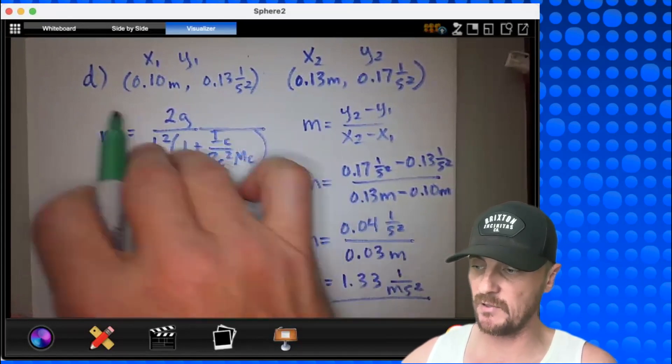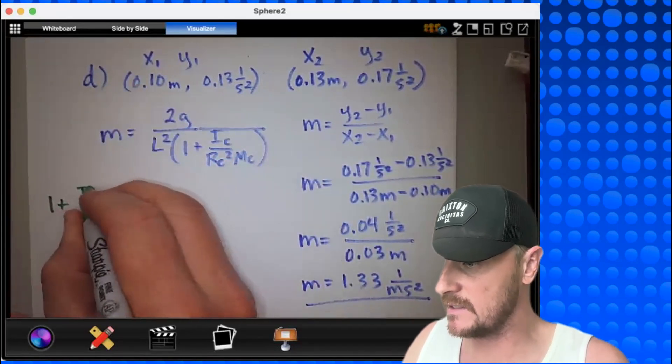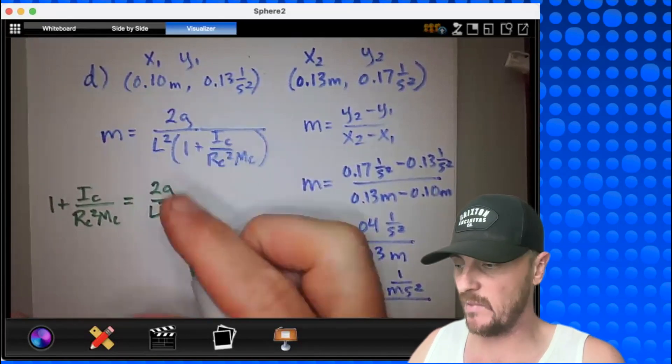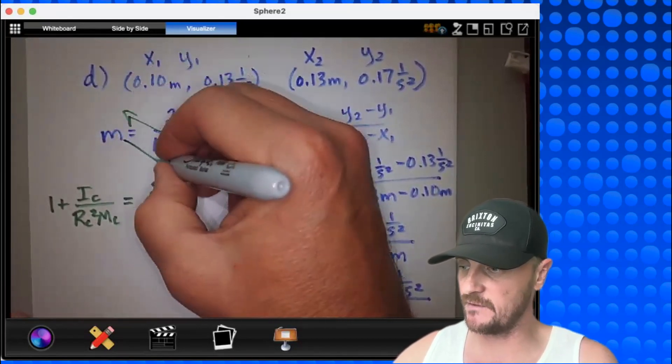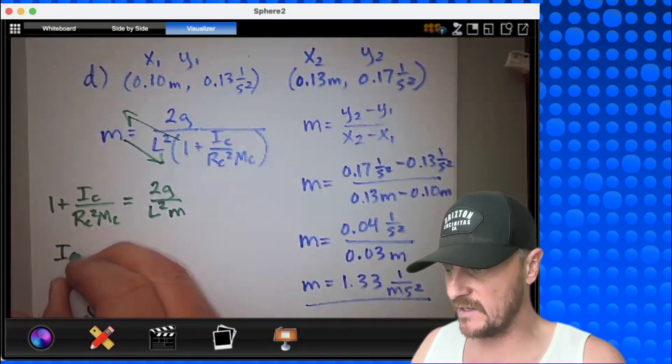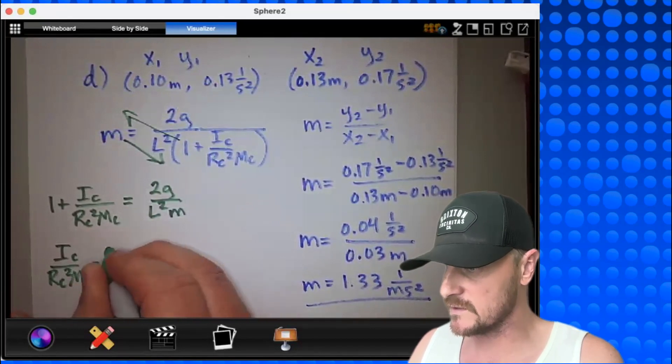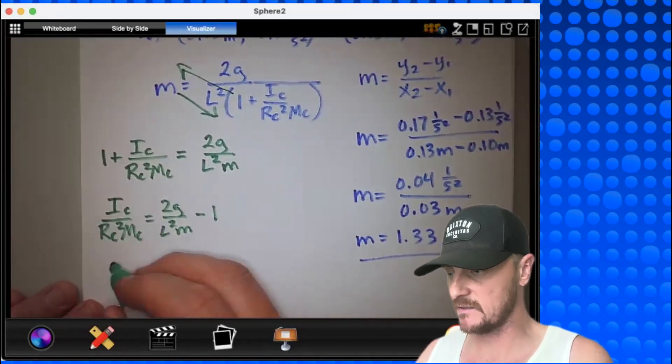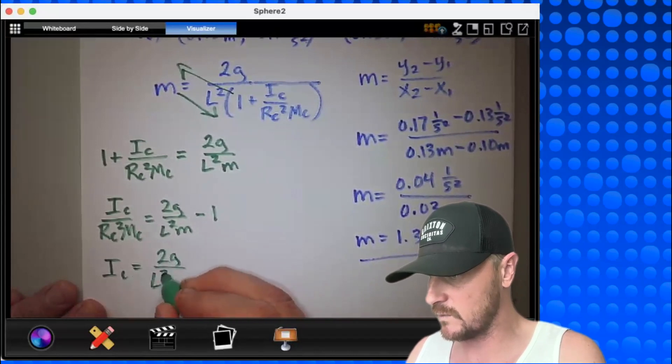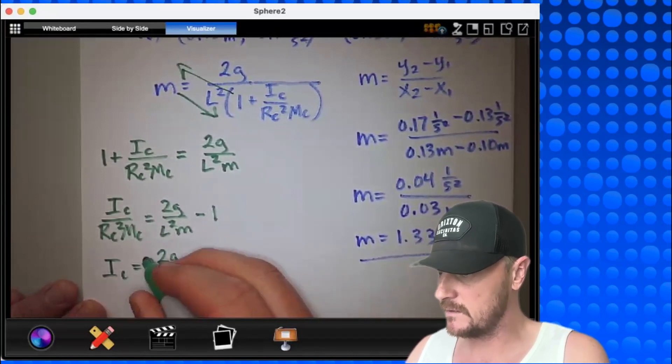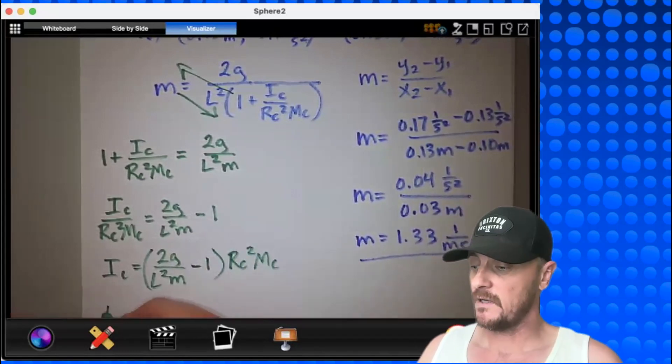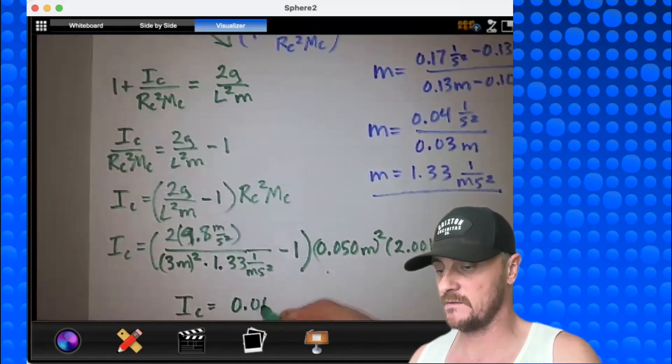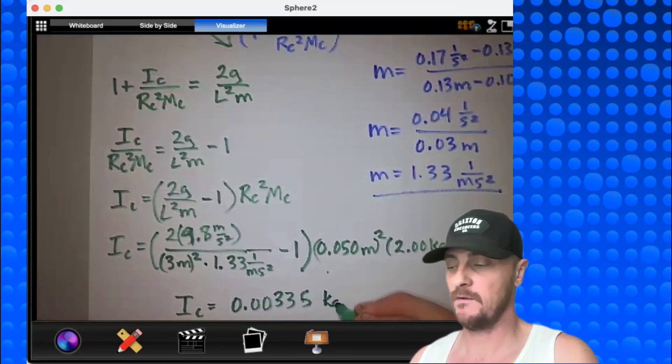Alright, well, to isolate ic, we've got some work to do. I'm going to multiply this to the top. I'll get 1 plus ic over rc squared mc equals 2g divided by l squared divided by m also. So I'm just doing a little cross multiplication right now, shifting things around. Then I would subtract 1 to the other side. I would have ic over rc squared mc equals 2g over l squared m minus 1. Finally, I would multiply both sides by this. I would get ic equals 2g over l squared m, that's my slope again, minus 1 times rc squared mc. Okay, finally, let's plug in. And all of this yields ic equals 0.00335 kilogram meter squared. And that's it.